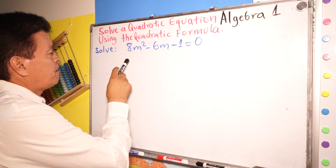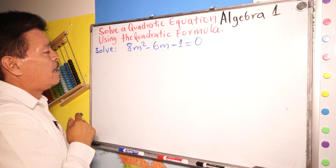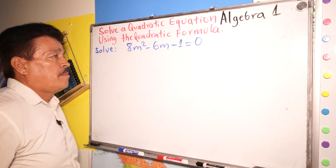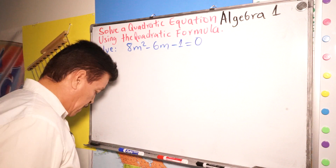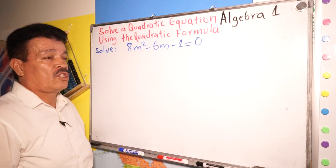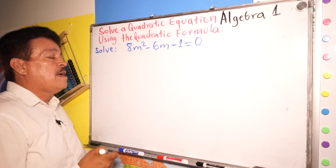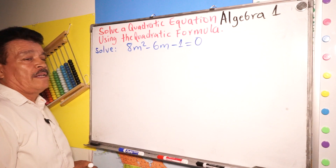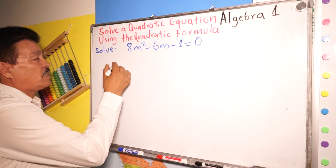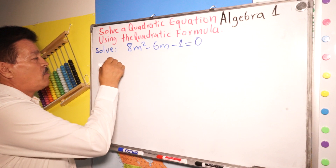Our problem for today is m squared minus 6m minus 1 equals 0. Remember the quadratic formula — this is the quadratic formula.